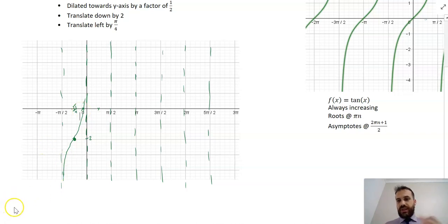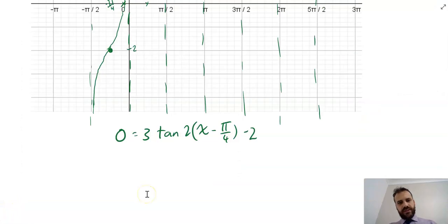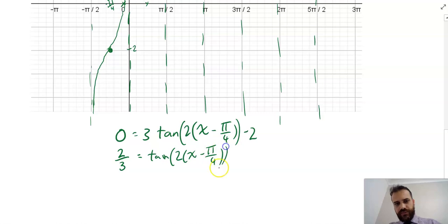The one point I really don't have is my root, and there's nothing for that except to try to solve this equation by letting y equal 0. 0 equals 3 tan(2(x - π/4)) - 2, there should be another bracket in there, and I start trying to solve it, I'll get 2/3 = tan(2(x - π/4)).